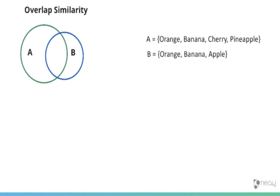If we take an example and look at overlap similarity, we can see there's two sets here, set A and set B. The intersection between those is orange and banana—the two items that occur in both sets. So the intersection is two in that case.